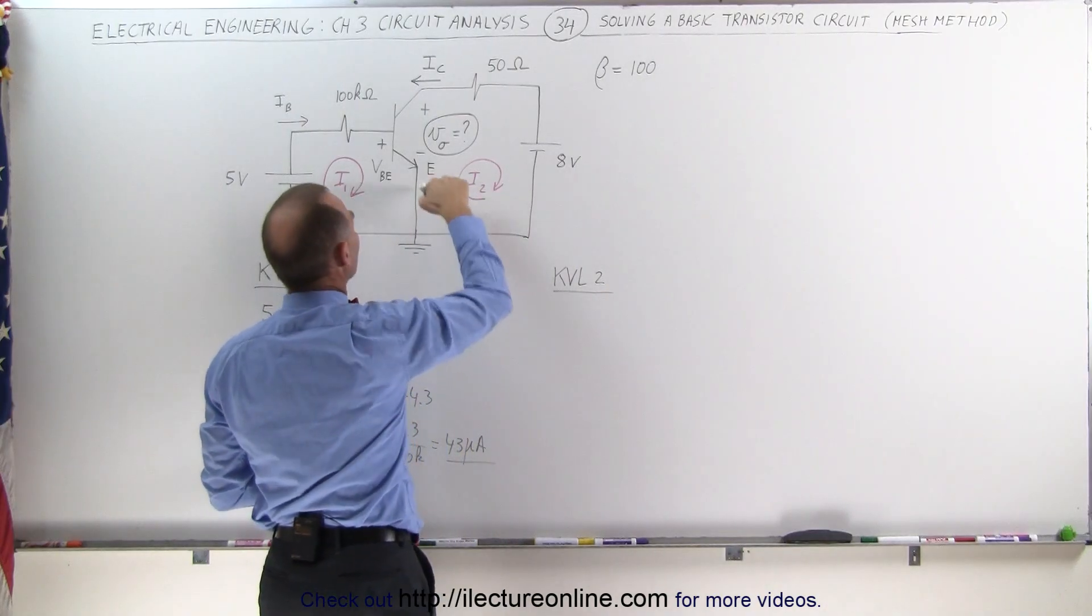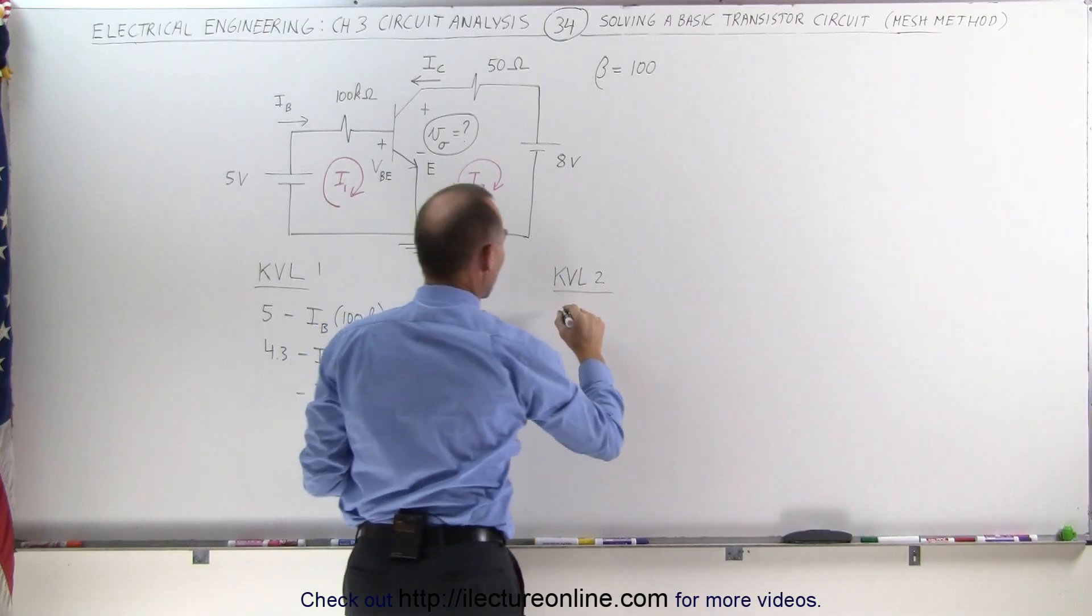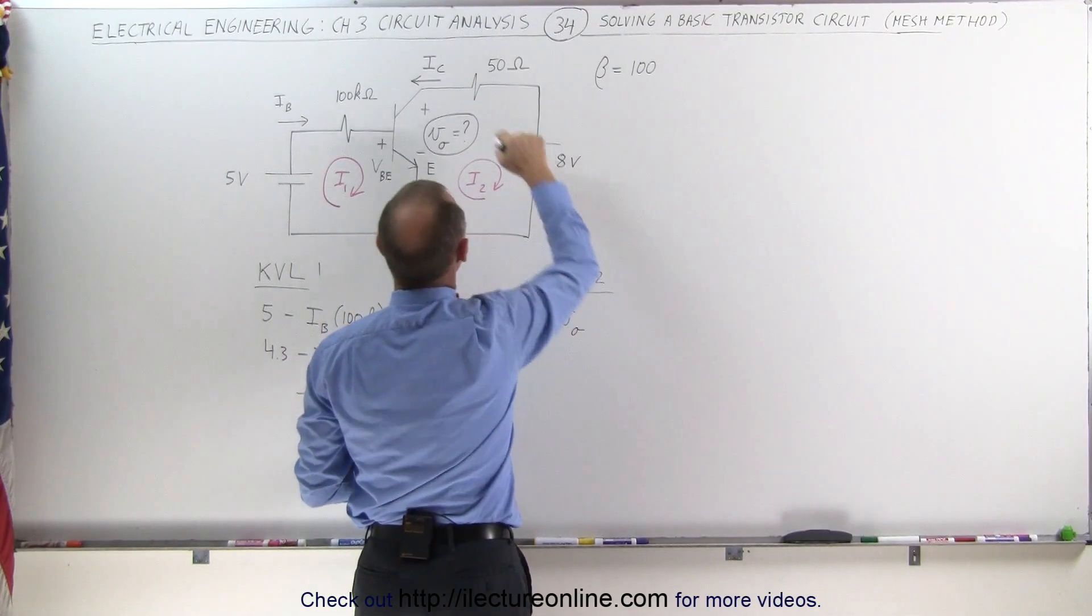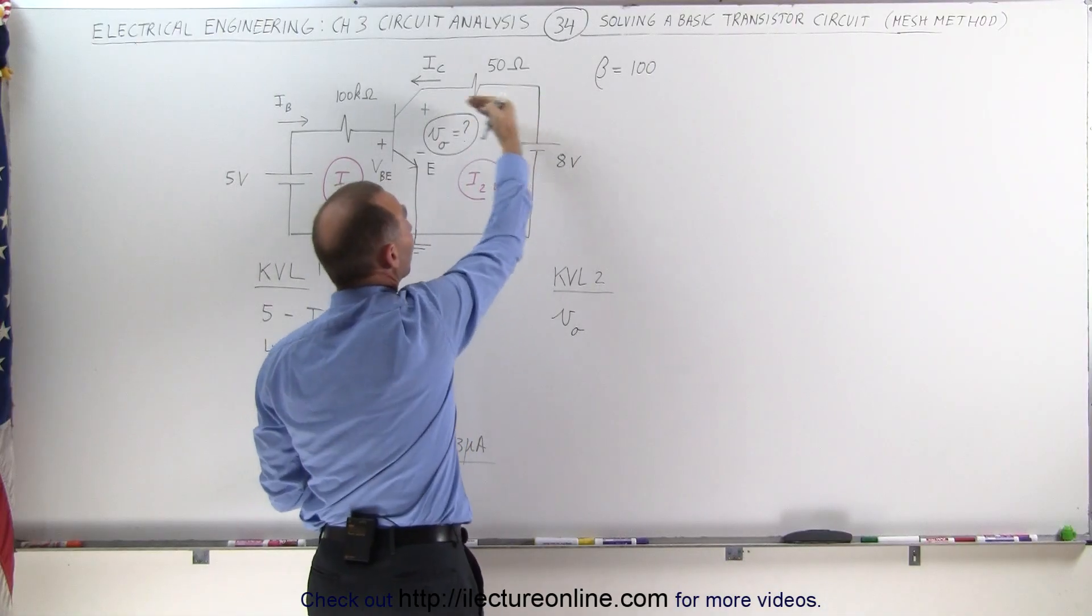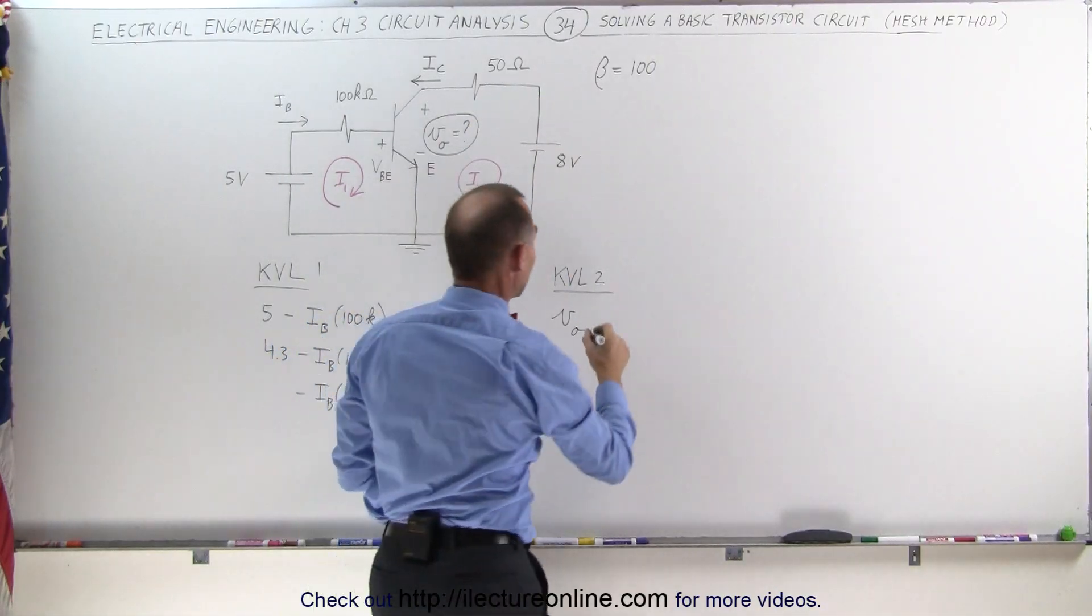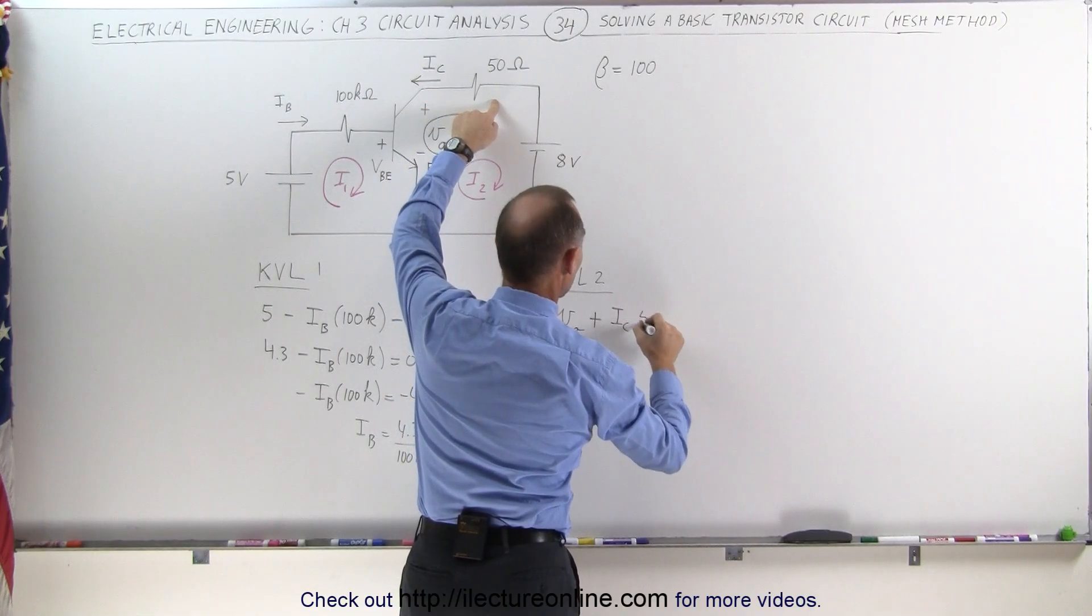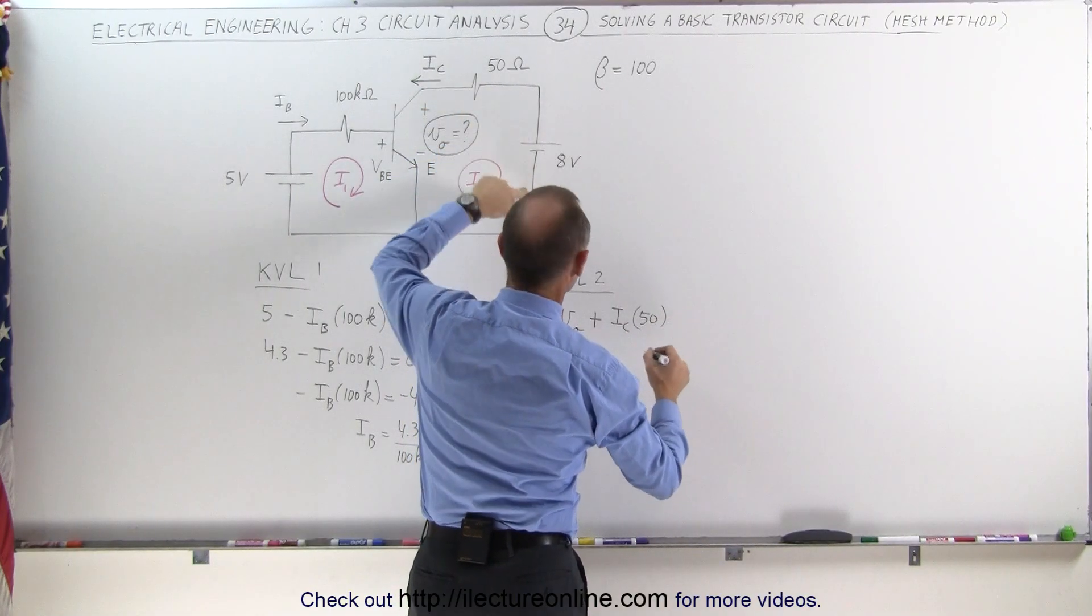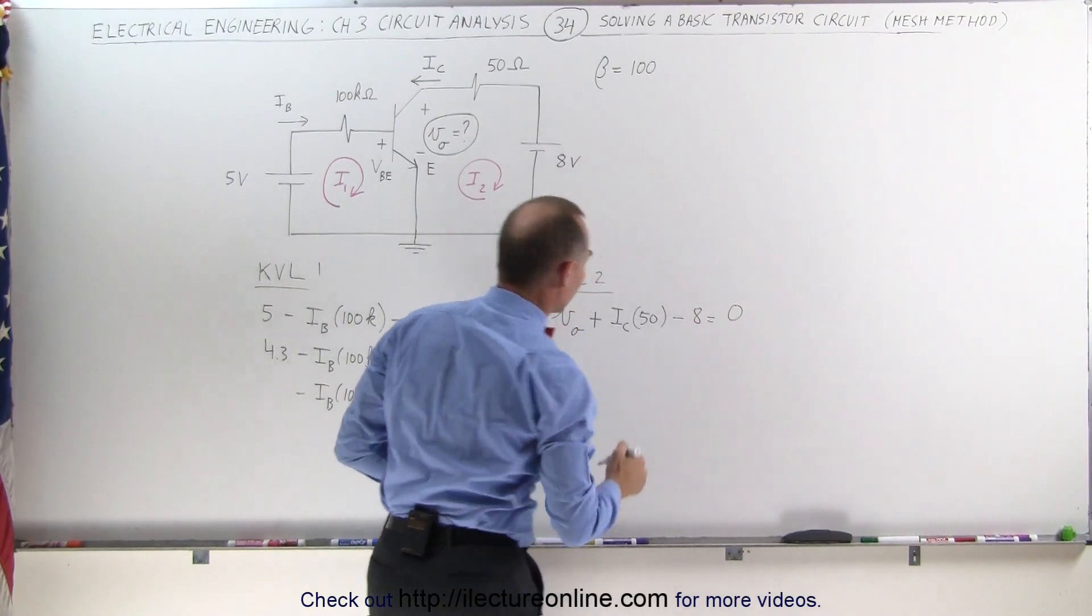we can say that we have a voltage rise of V sub O. Then we have a voltage rise going across from there to there, because we're going against the current. That means the voltage rise plus the current I sub C times 50 ohms. And then we have a voltage drop of 8 volts to get back to the point where we started, which is zero.